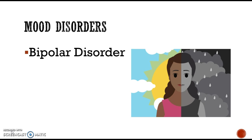Bipolar disorder is the second mood disorder category. It used to be called manic depressive disorder because it involves a very high manic state followed by a very low depressive state. Individuals may be very empathetic, then very cheerful and talkative with increased energy and restlessness — characterized by those emotional extremes, swinging from very high highs to very low lows. Treatment includes psychotherapy and biological treatments, typically mood-stabilizing drugs like lithium.